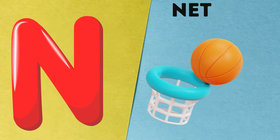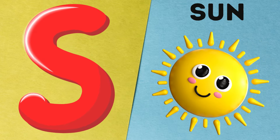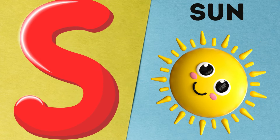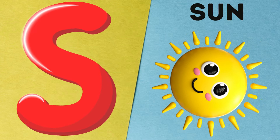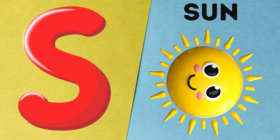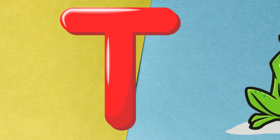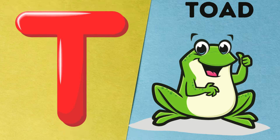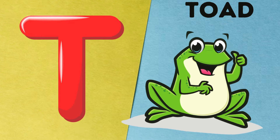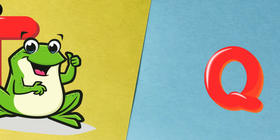Q is for queen, k-k-queen. R is for rabbit, r-r-rabbit. S is for sun, s-s-sun. T is for toad, t-t-toad.